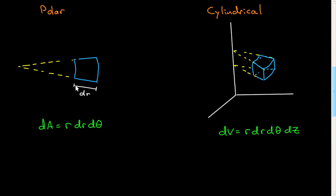If you make a change dr, you'll affect the area proportional to dr, and it doesn't matter what radius you are — it doesn't matter what distance you are from the center. Any variation in dr will give you the same proportional increase in the area. Whereas this distance, thinking of it as a linear distance, this is r dθ, where this angle here is dθ, and this does depend on r.